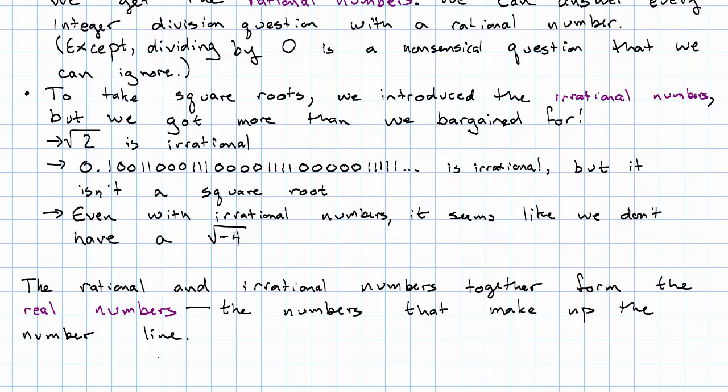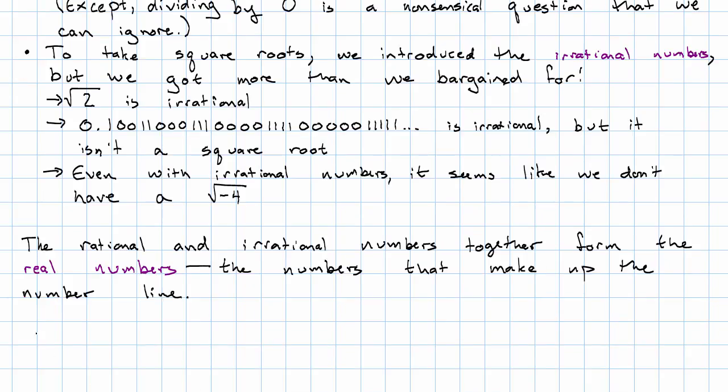The rational and the irrational numbers together make up the real numbers. The real numbers are the numbers that make up the number line. You remember the number line.